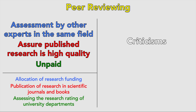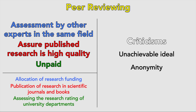The three major criticisms you need to know are: first, unachievable ideal — it isn't always possible to get an expert, so the research may be passed because it wasn't understood. Second, anonymity — in a competitive field, scientists with grudges against others may let that affect their results, and though it is supposed to be anonymous, sometimes it can be obvious whose work it is. And finally, publication bias, where peer review tends to favour the publication of positive results due to good implications.